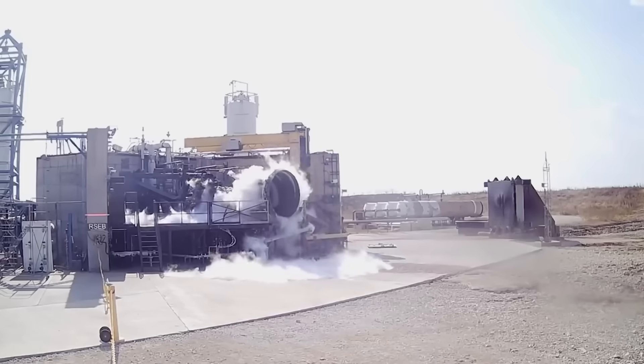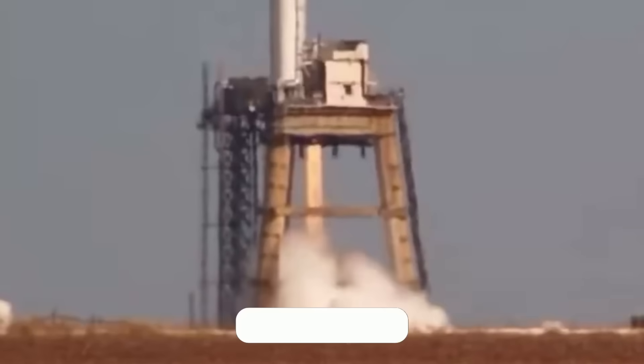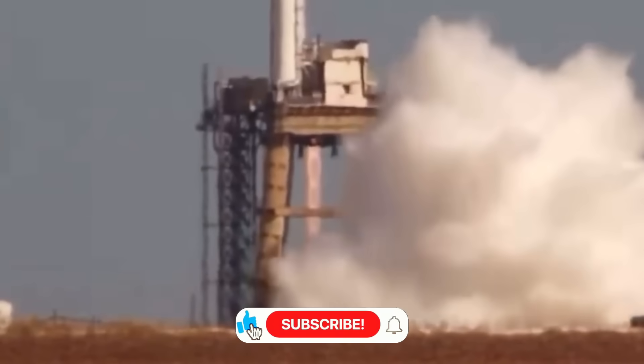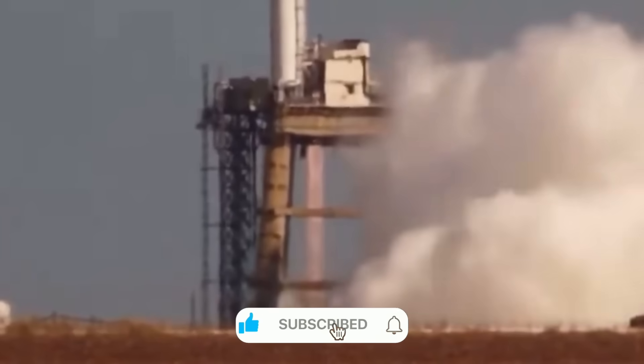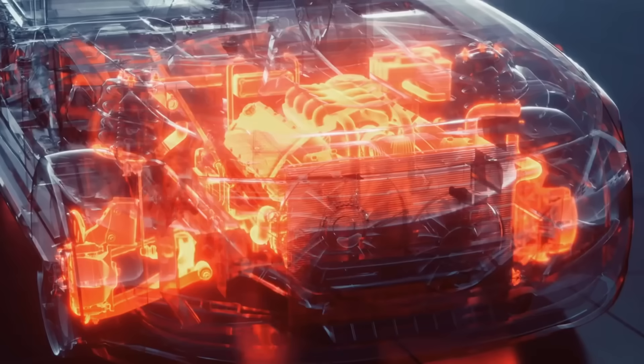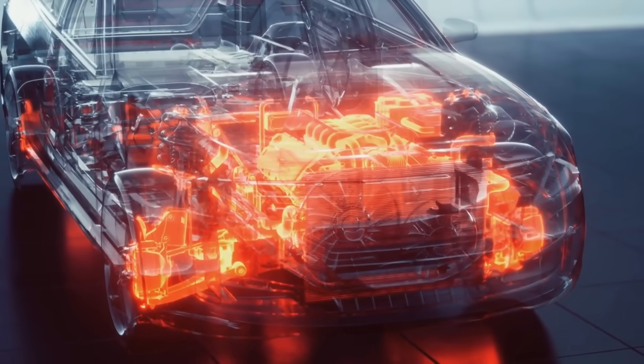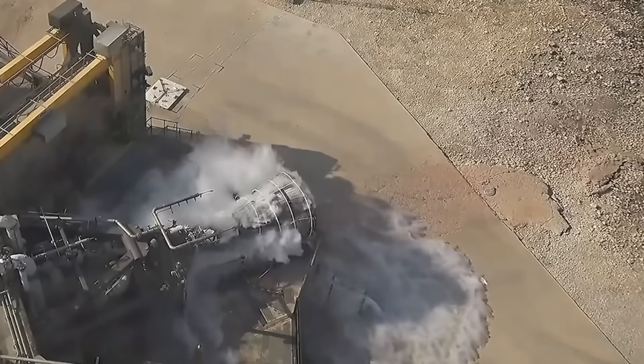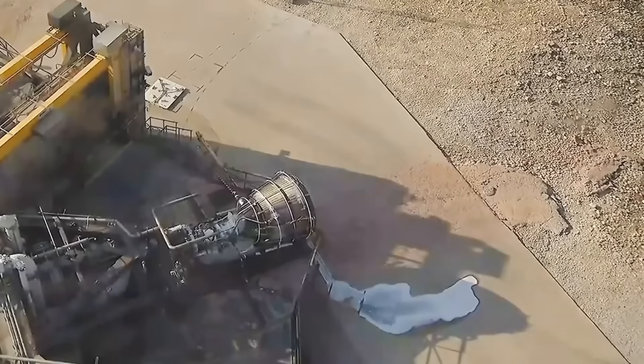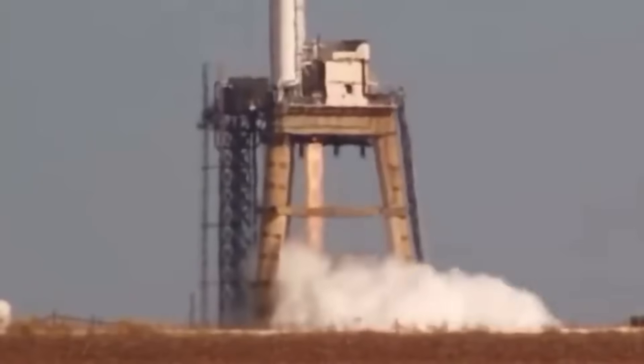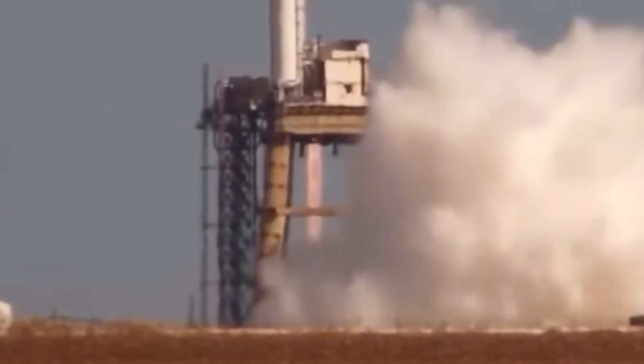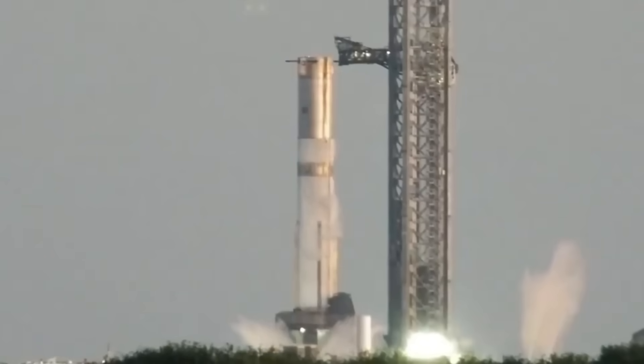Think of a rocket engine like a controlled explosion in a tube. The challenge isn't just making things go boom. It's about controlling that explosion with ultimate precision, thousands of times more powerful than a car engine, running at temperatures that could melt most metals. The heart of any rocket engine is its combustion chamber. This is where fuel and oxidizer meet, creating an inferno hot enough to melt through almost anything. But getting those propellants into the combustion chamber? That's where things get interesting. And that's where the Raptor shows its true innovation.